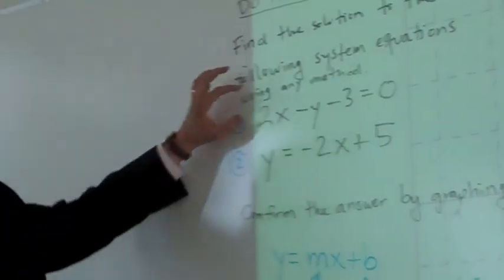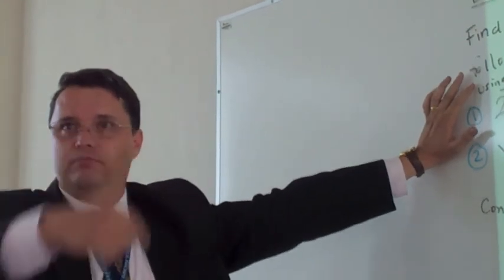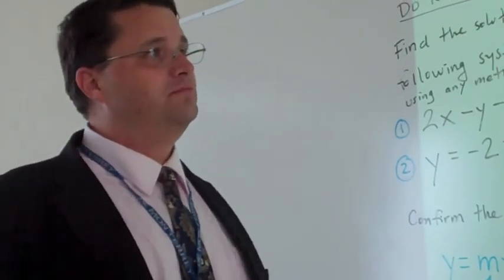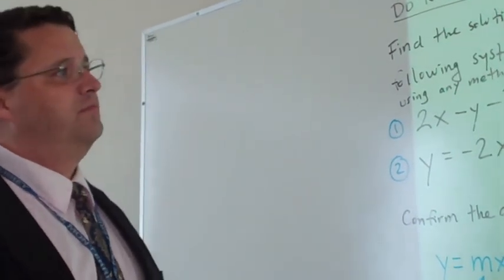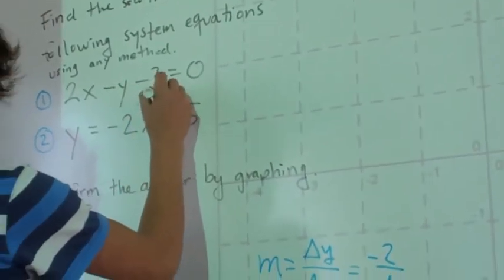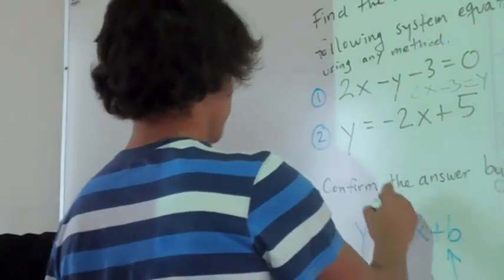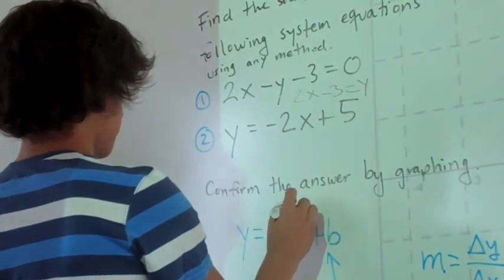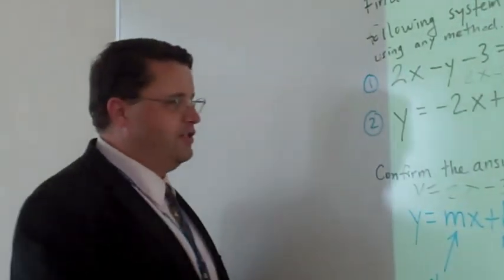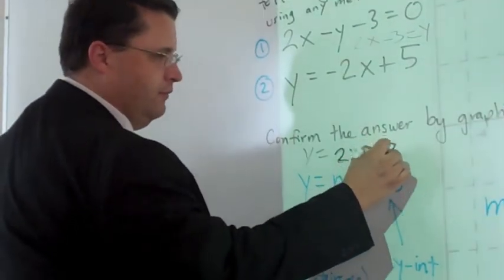Okay, now who would like to do the first one? The first one you have to isolate y. It's pretty easy. Okay? This looks like a strange letter from outer space. 2x minus 3. Okay?